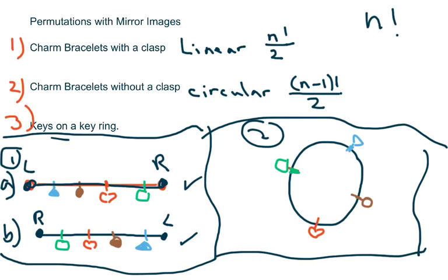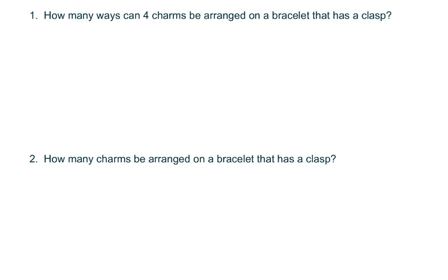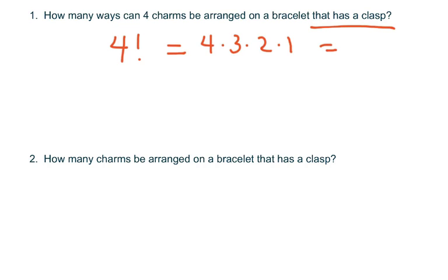The same applies for the circular arrangement without a clasp. So let's do an example: how many ways can four charms be arranged on a bracelet that has a clasp? With a clasp, it's linear — that would be 4 factorial, which is 4 × 3 × 2 × 1 = 24. However, since there's a mirror image, we divide by two, giving only 12 ways to arrange the charms to get 24 different arrangements, because you can flip the bracelet to get the mirror.